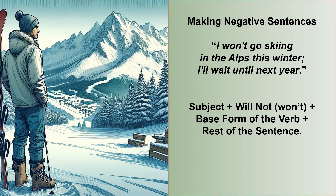The structure for making negative sentences using the Future Simple is: subject plus will not, or won't as the contraction, plus the base form of the verb plus the rest of the sentence.